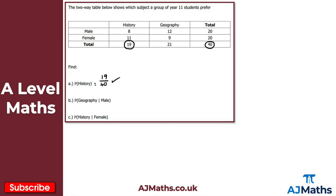For part B, we now have conditional probability. We're looking for the probability that a randomly selected student studies geography given that they are male. We need to restrict the sample space to male students, so the denominator is 20, since there are 20 male students. Out of those 20, 12 studied geography, giving us 12 over 20 — or equivalently 6 over 10.